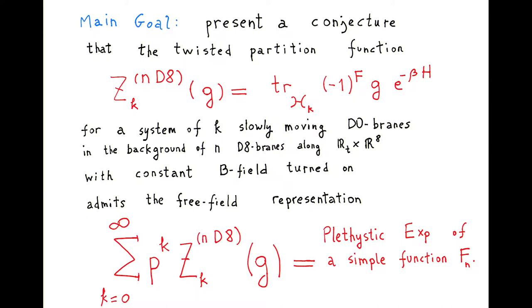My main goal is to present a conjecture for some supersymmetric partition function — actually it will be twisted, as denoted by the group element G. The system I'm considering is a system of K D0 brains in the slowly moving approximation, moving in the background of N D8 brains in flat space along R_T times R^8, with a constant B field turned on. This object, which I call Zeta_K for N D8 brains, can be written in the operator formalism as a character-valued Witten index, where H_K is the Hilbert space of the appropriate quantum mechanics, (-1)^F is the fermion number, the twist is by G, and the Hamiltonian is present — though since the system is supersymmetric it won't depend on the temperature beta.